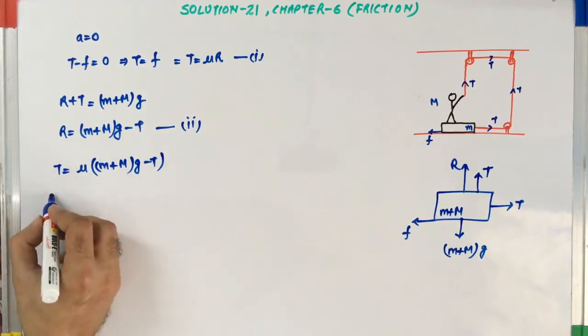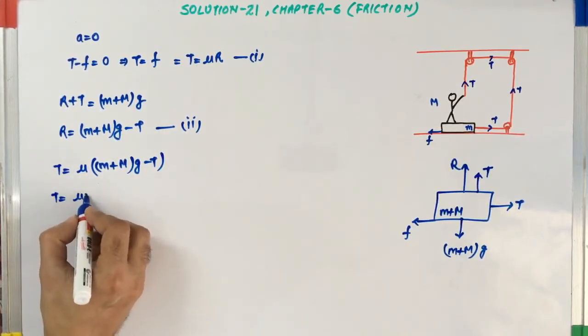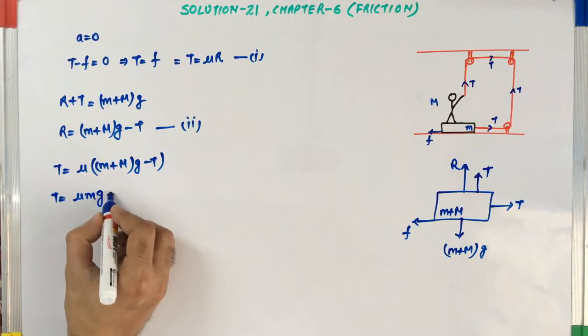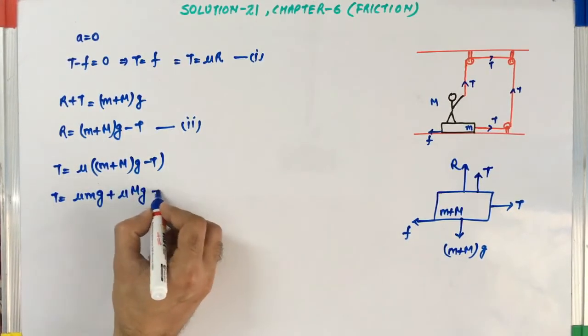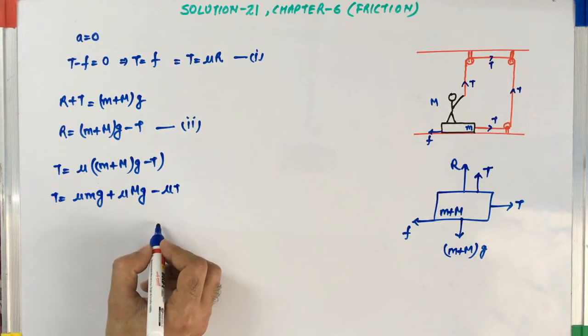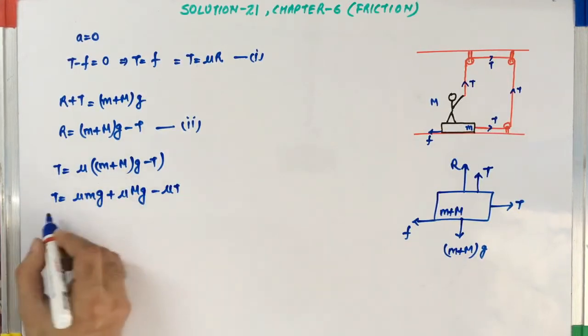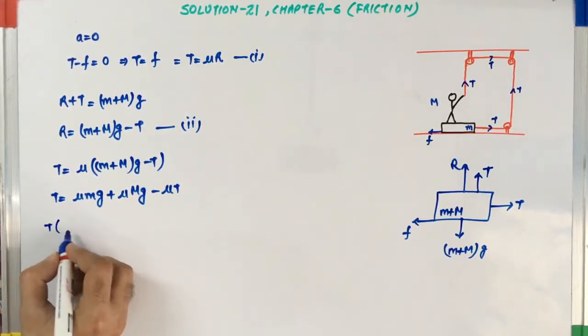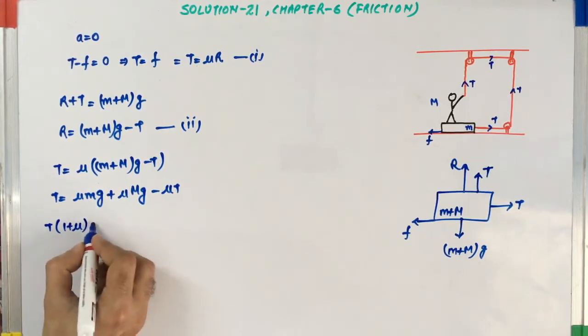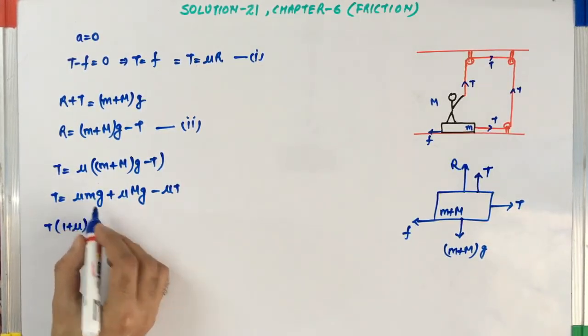Now further solving this T is equal to mu M plus mu M into G minus mu into T. I will take this mu T to the left hand side. So this will become T times 1 plus mu is equal to mu into G times M plus M.